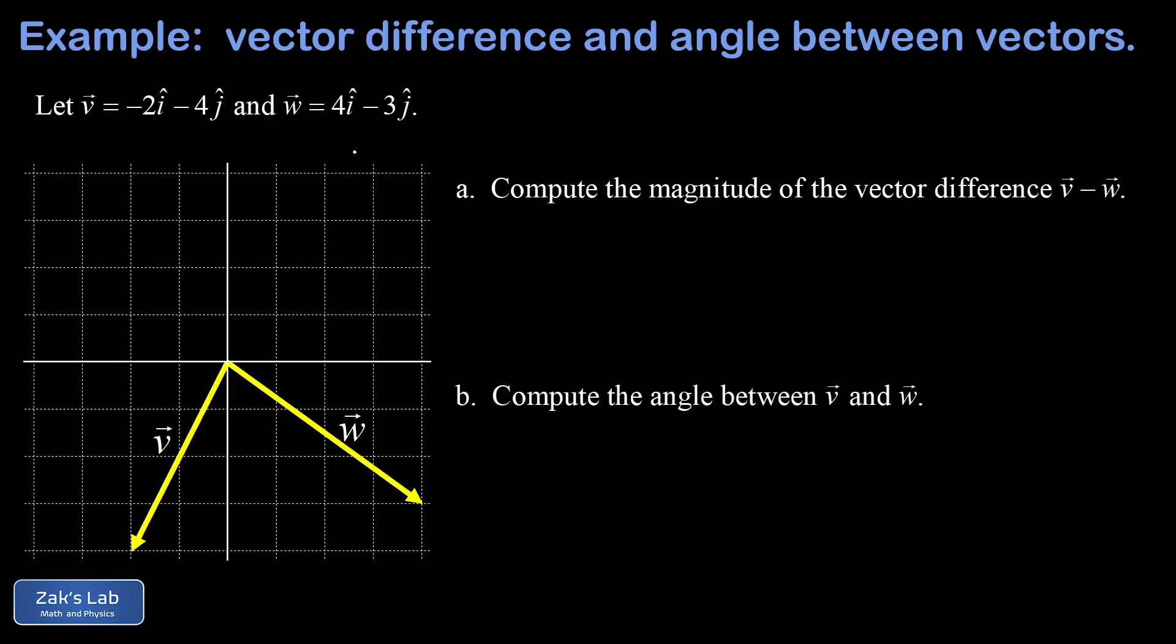W is 4i-hat - 3j-hat, so starting from the origin we see that vector going four units to the right and three down. In part a we want the magnitude of the vector difference. We're going to do this algebraically, but I also want to look at the geometry of the vector difference while we're at it.